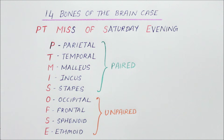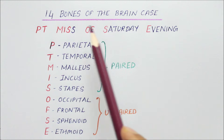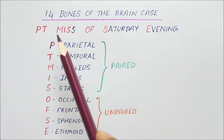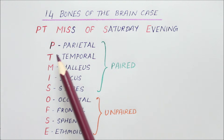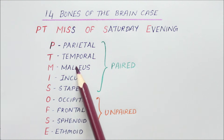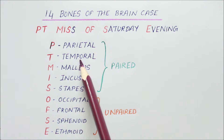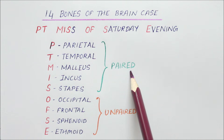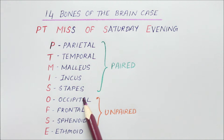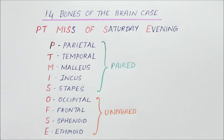The mnemonic to remember the 14 bones of the brain case is 'PT MIS of Saturday evening.' P stands for parietal, T for temporal, M for malleus, I for incus, and S for stapes — these five are the paired bones. O stands for occipital, F for frontal, S for sphenoid, and E for ethmoid — these four are the unpaired bones.